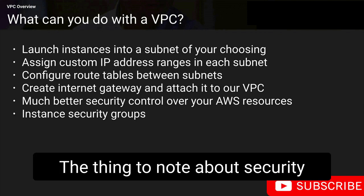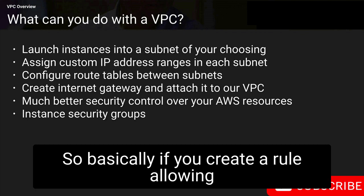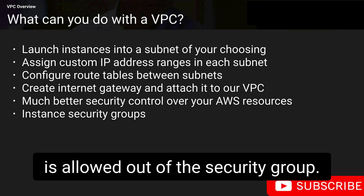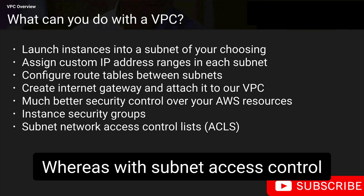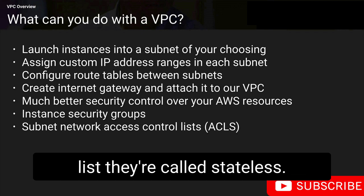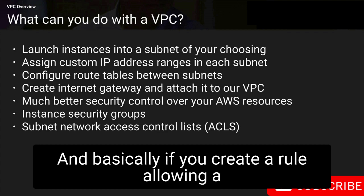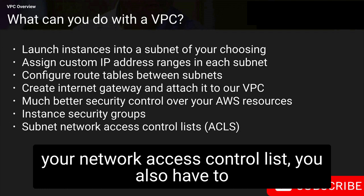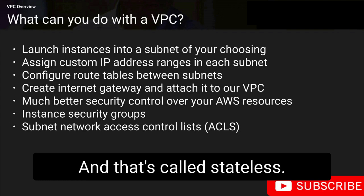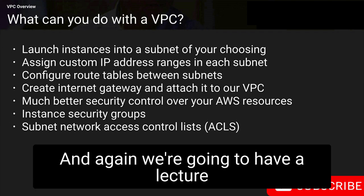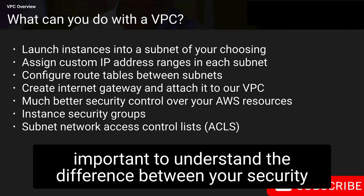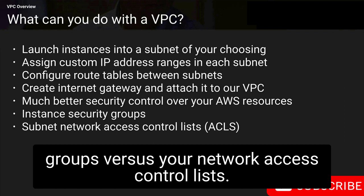Security groups are stateful — if you create a rule allowing HTTP into your security group, by default HTTP is also allowed out. Whereas subnet access control lists are stateless — if you create a rule allowing HTTP traffic into your network access control list, you also have to create a rule allowing it back out again. We're going to have a dedicated lecture on VPC security covering the difference between security groups and network access control lists.